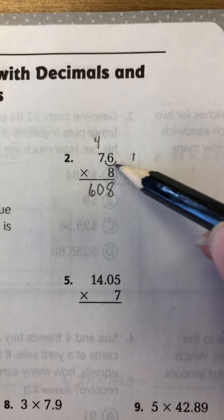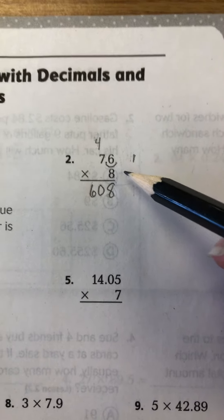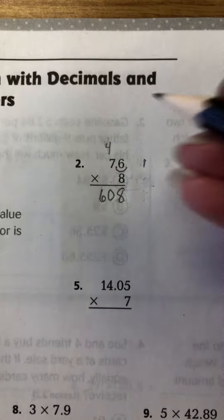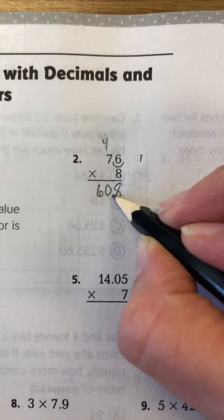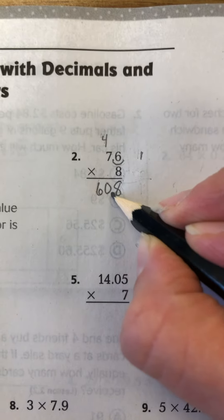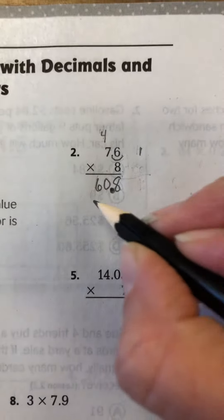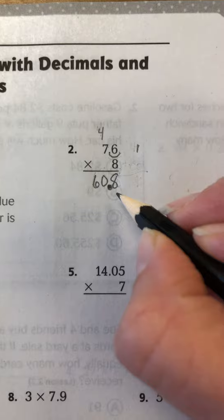So all in total, we have one digit over. So what you do is you go down to your answer and you're going to go over that many spaces. So one digit over from the edge is right here, which means this is where my decimal would go. So your final answer would be 60.8.